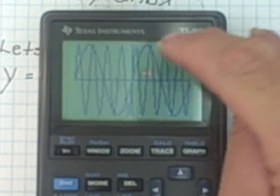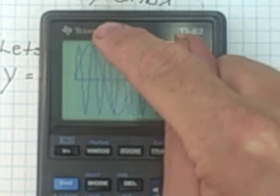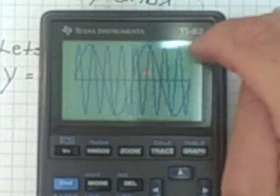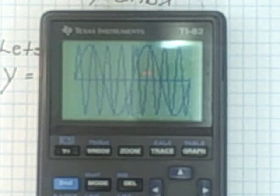And now we have 1, 2, 3, 4, 5, 6, 7, 8. So we have 4 times as many maximums and 4 times as many minimums, making the period 4 times as small. That's what it's done.